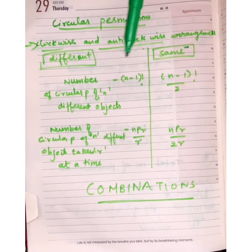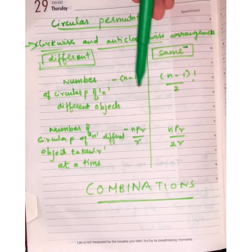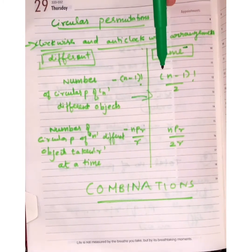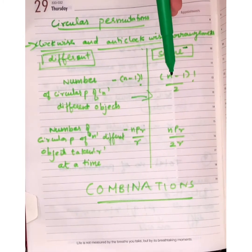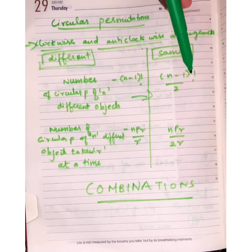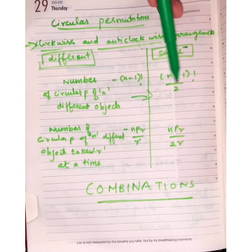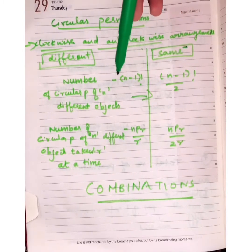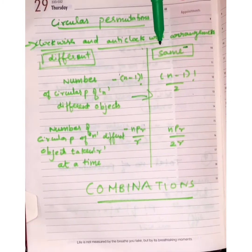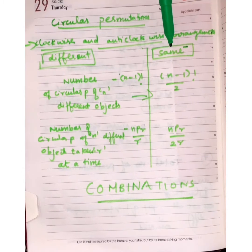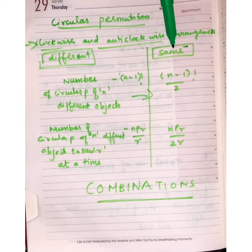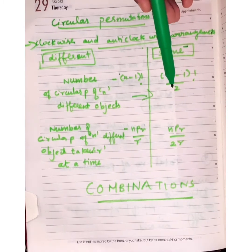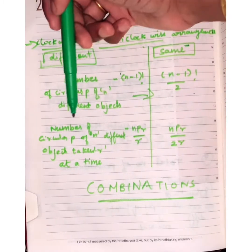When the clockwise and anti-clockwise arrangements are considered the same, the formula for the number of circular permutations of n different objects is (n−1)! / 2 — the same formula but divided by 2.